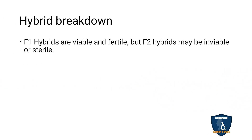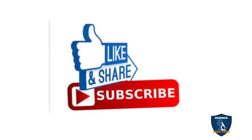Hybrid breakdown: the F1 hybrids are viable and fertile, but F2 hybrids may be inviable or sterile. When hybridization takes place in F1, you get fertile and viable ones. But when crossed again in the F2 generation, hybrid inviability occurs — it won't withstand and will die or become sterile. This is called hybrid breakdown. Hope you understand the topic. If you have any doubts, post them in the comment box. Give a thumbs up, share and subscribe to Science Easy Tech channel.